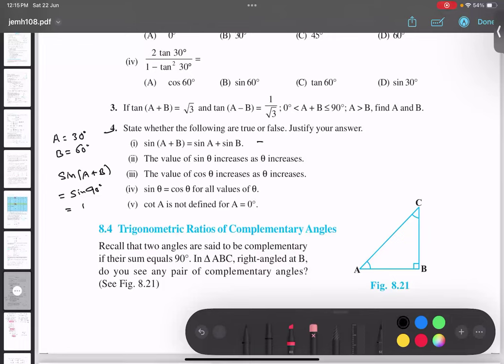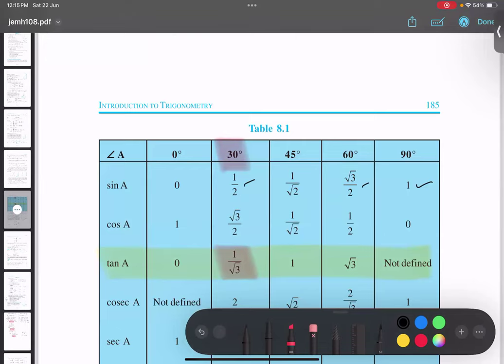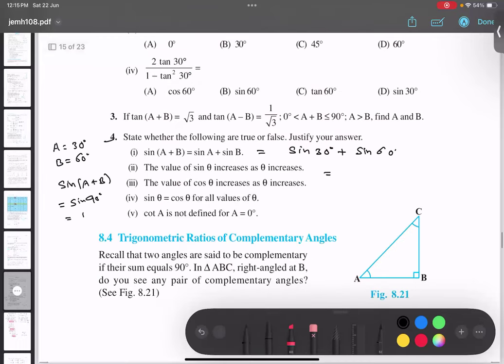And sin 90 value is what? One. So this is one. Whereas this right-hand side, if I solve, sin A will be sin 30 plus sin 60. Sin 30 value is what? Half. Sin 60 value is what? Root 3 by 2. So half plus root 3 by 2, which is 1 plus root 3. So obviously 1 and this are not equal.